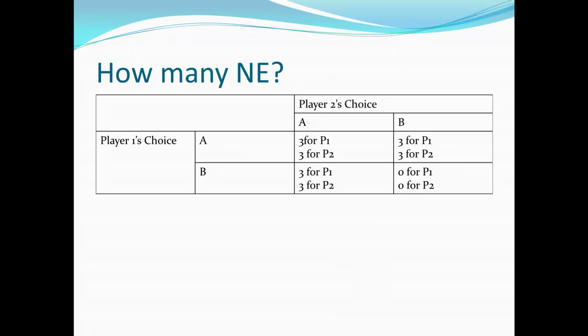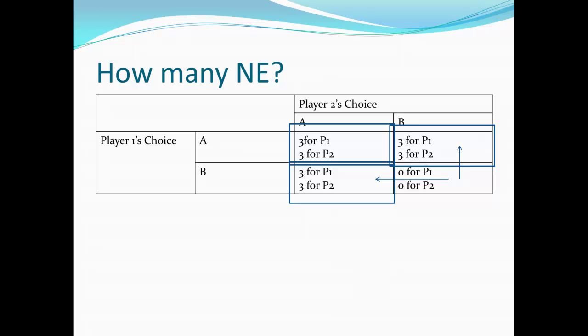What about a case where there's really just one bad outcome? If player 1 and player 2 both choose B, they both get nothing. But as long as at least one of them chooses A, they both get 3. Looking at best responses: if player 2 plays A, player 1's best response is either A or B — both count. If player 2 plays B, player 1's best response is clearly A, since 3 is better than nothing. Player 2 is in the same boat. So it turns out there are three Nash equilibria: both play A, or player 1 plays A while player 2 plays B, or vice versa. As long as somebody is playing A, we're in a Nash equilibrium.